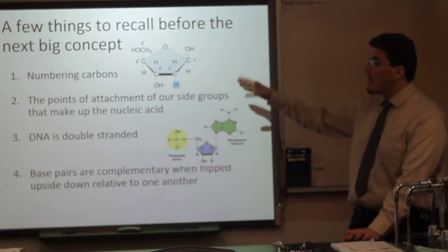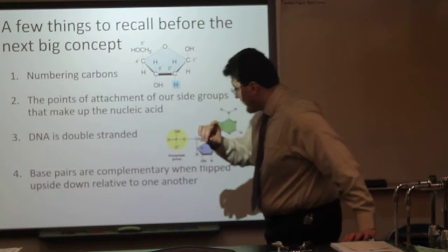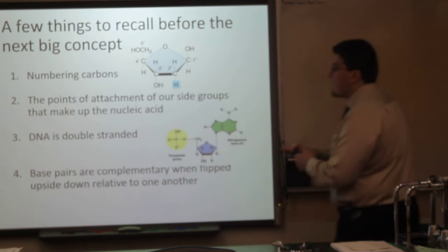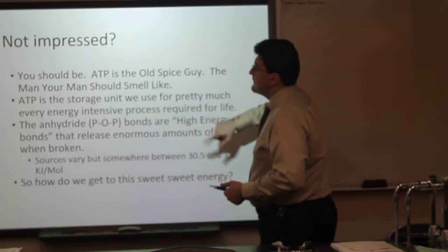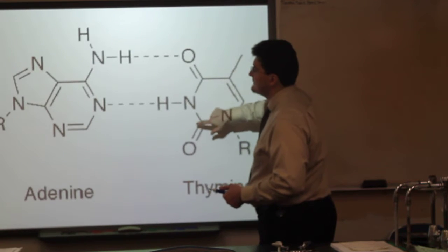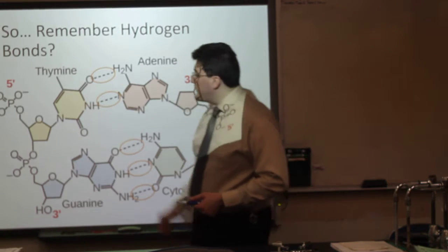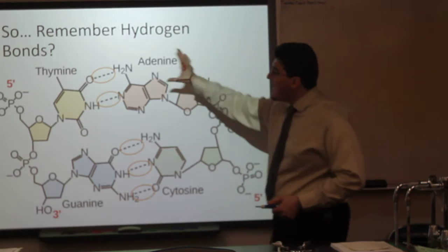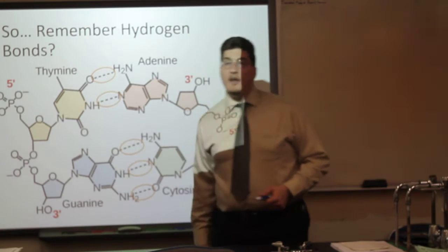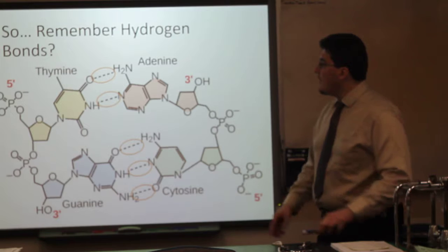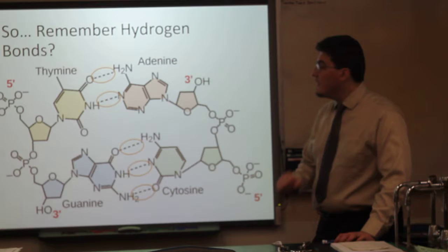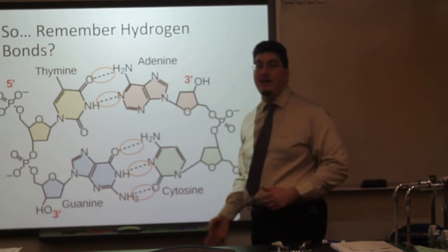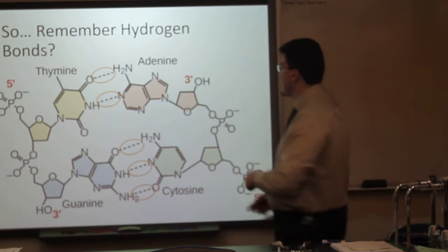Remember that DNA is double stranded. Base pairs are complementary when you flip them upside down relative to one another. When we flip them upside down, we have 3' running here to 5' there, and 3' here running to 5' there. So when you flip them upside down, adenine pairs with thymine and cytosine pairs with guanine. These are anti-parallel double stranded — they run in opposite directions and they are parallel to one another, and they are complementarily base pairing when reversed relative to one another.